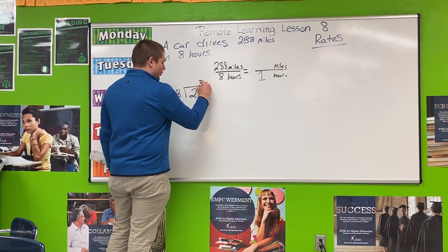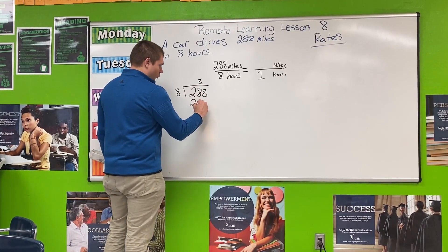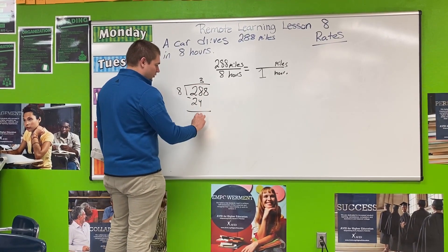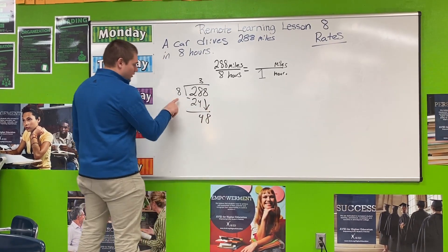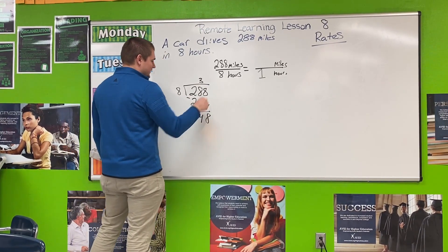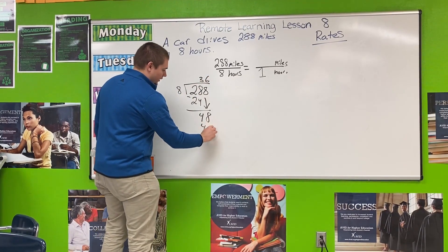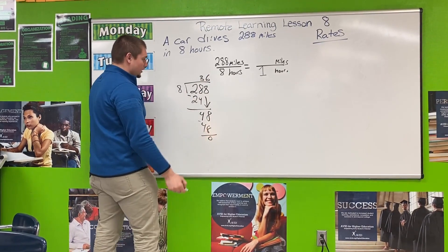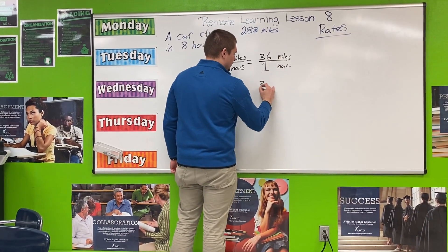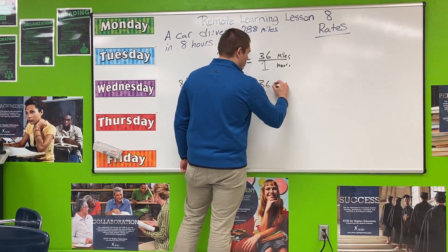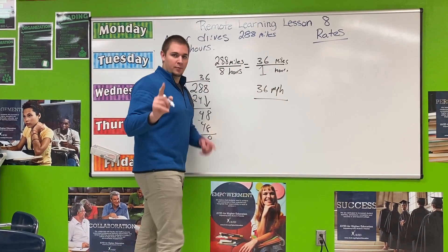Eight can go into 28 three times. Three times eight is 24. 28 minus 24 is four. Bring the eight down. Eight can go into 48 six times. Six times eight is 48. I have no remainder so I am done. So that means I can go 36 miles in one hour — miles per hour. Stay tuned for number nine.